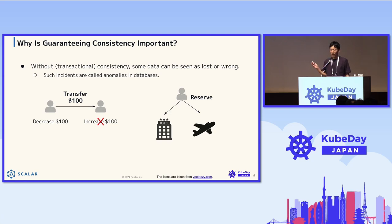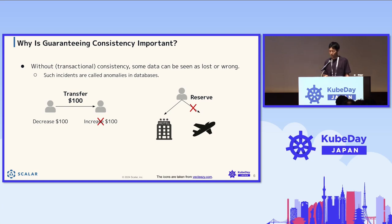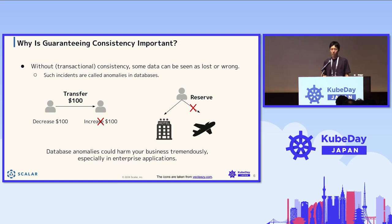Another example: you plan a trip and reserve a hotel and a flight ticket — maybe through Expedia or Rakuten Travel. If the flight ticket reservation fails for some reason in the backend but you think it succeeded, that's going to be a problem. Such database anomalies are happening all the time, and they could harm your business tremendously, especially in enterprise applications.